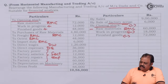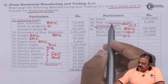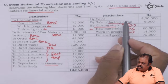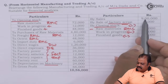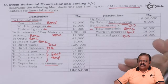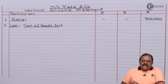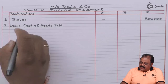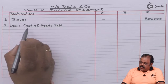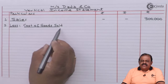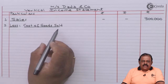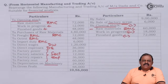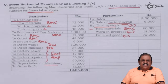First we are required to record sales of 9 lakhs. To find gross profit from sales, we are required to deduct cost of goods sold. Let us first consider expenses relating to materials.